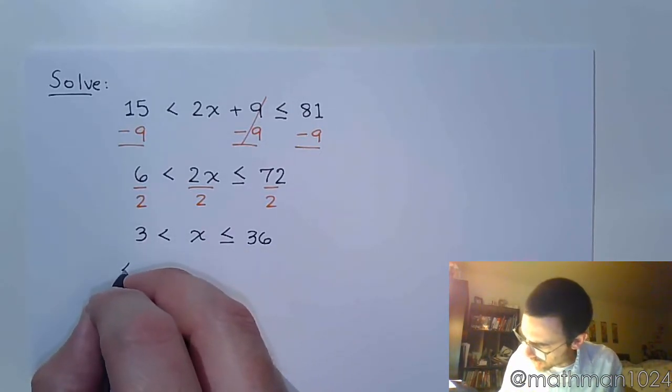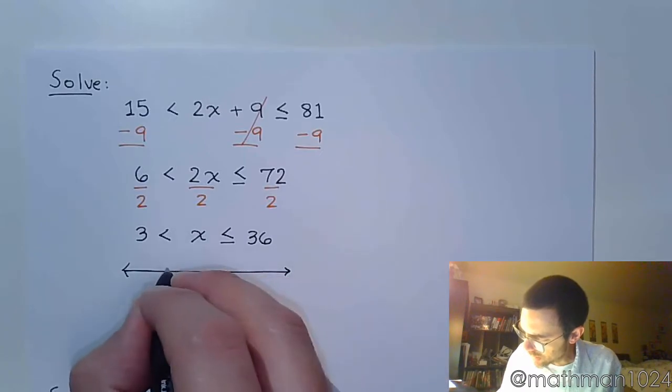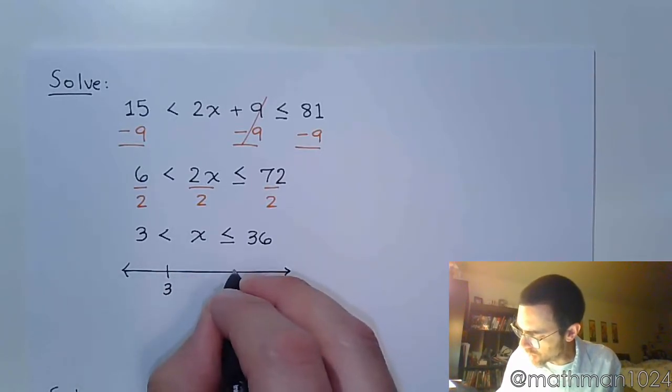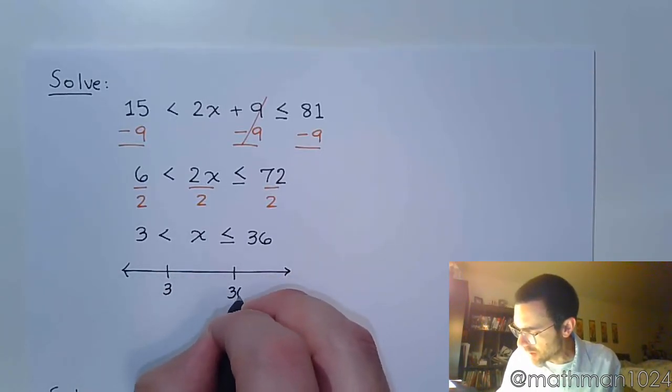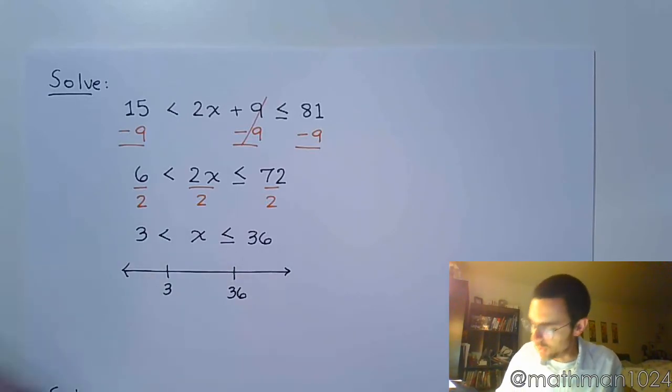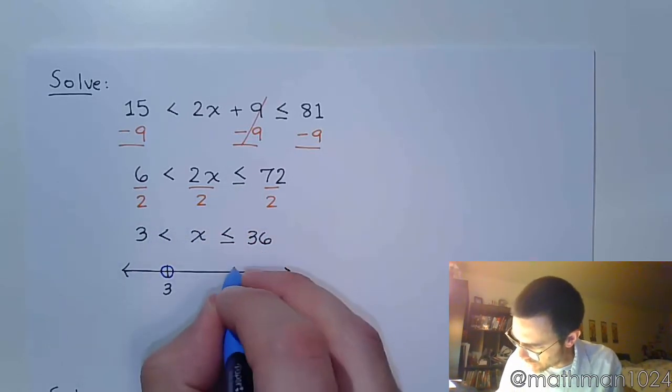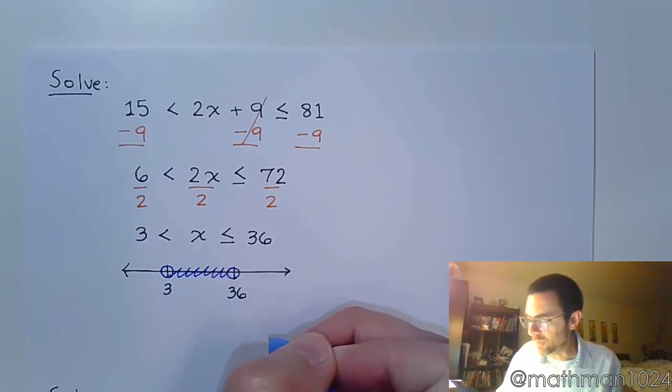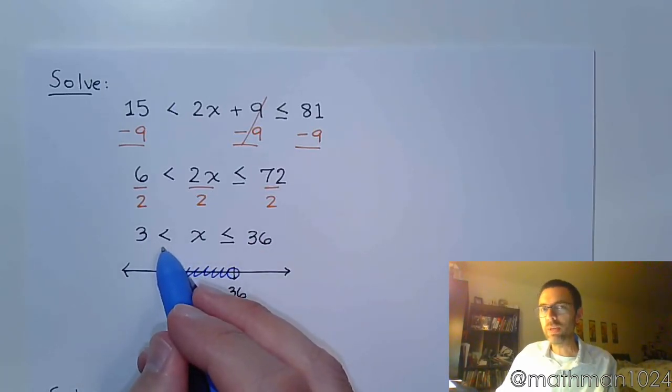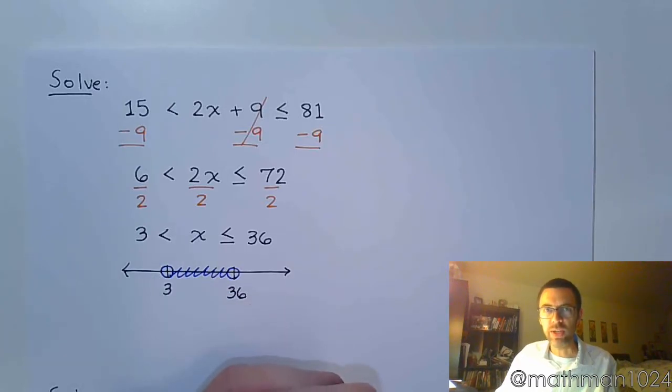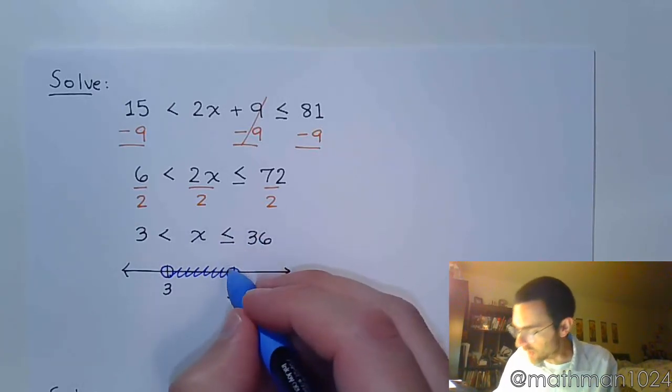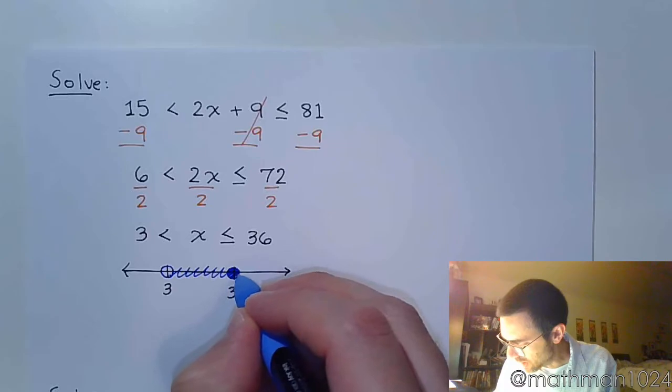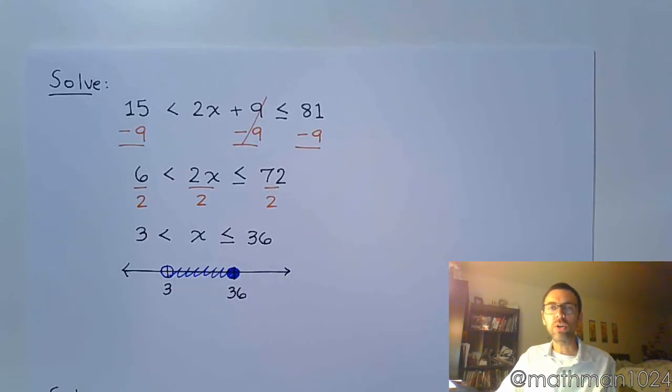So, let's go straight to that number line. My solutions represented by x are those values that are in between 3 and 36. So, it's all of this stuff in the middle. It says less than but not equal to 3, so it's going to stay open. Less than or equal to 36, so that is going to be closed to indicate that we are including that value.